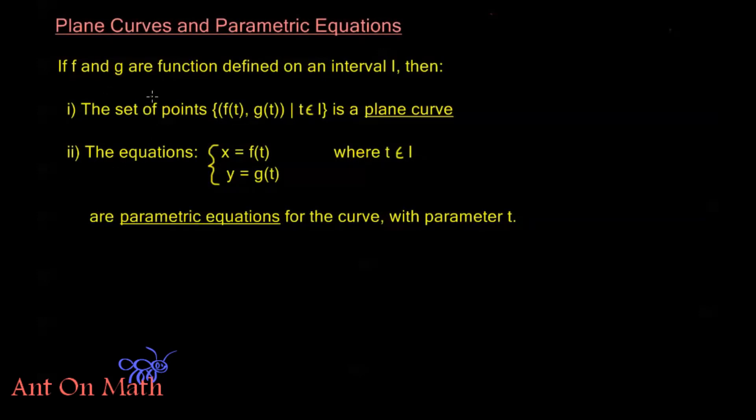Now if f and g are two functions defined on some interval I, then we say that the set of points (f(t), g(t)) - so there's a lot of parentheses in here, but here my x is f(t), my y is g(t) - I have all these ordered pairs, points in space, and this is for all t on the interval. So if I take the collection of all of those points I get a curve, and we call that a plane curve.